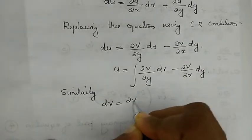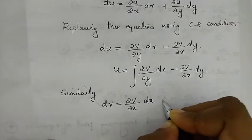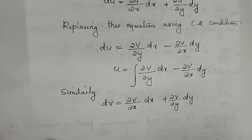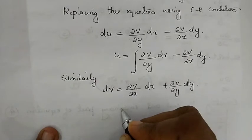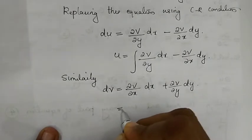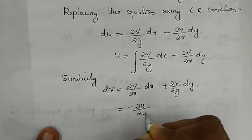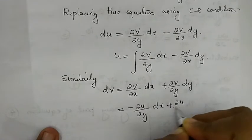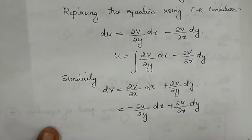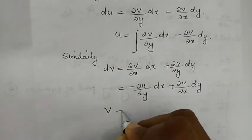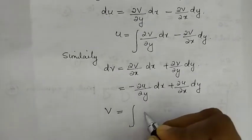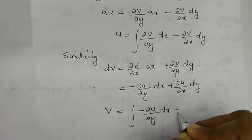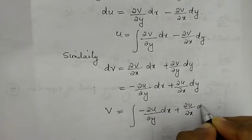Similarly, using ∂u/∂x = ∂v/∂y and ∂u/∂x substituted accordingly, v = integral of [−(∂u/∂y)dx + (∂u/∂x)dy].